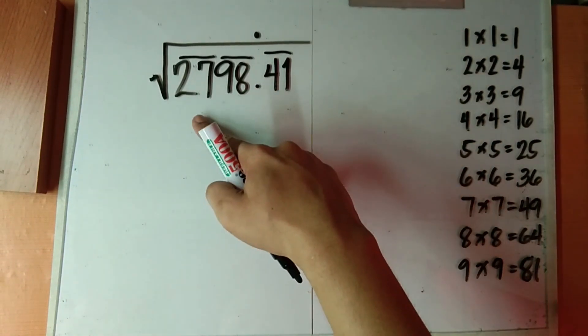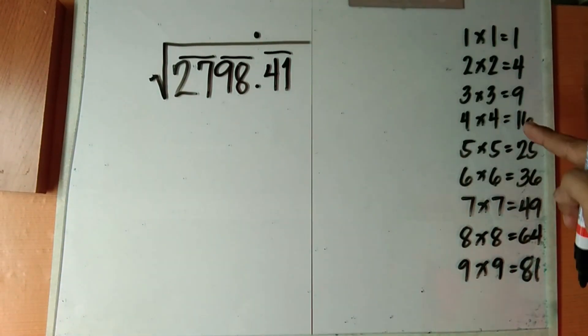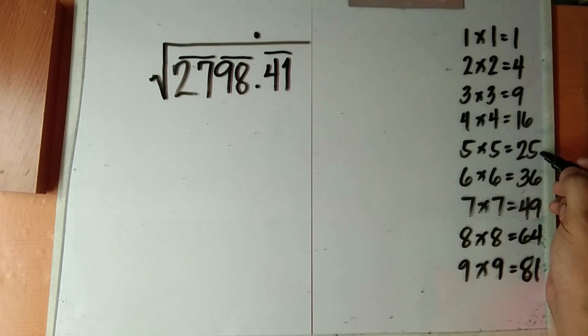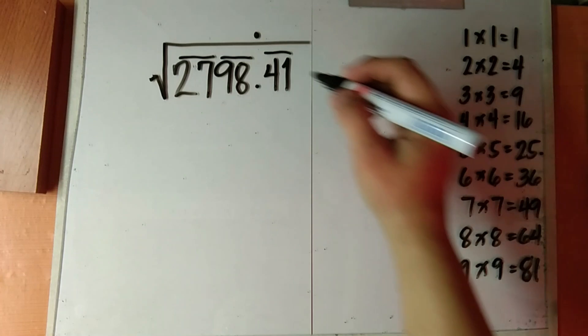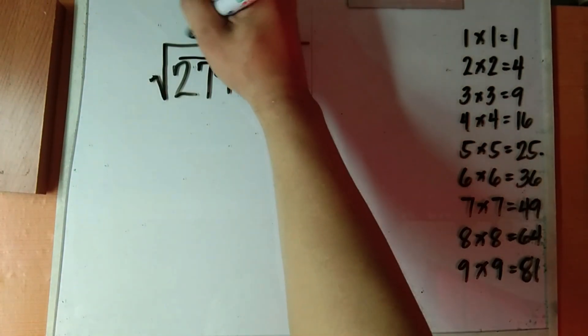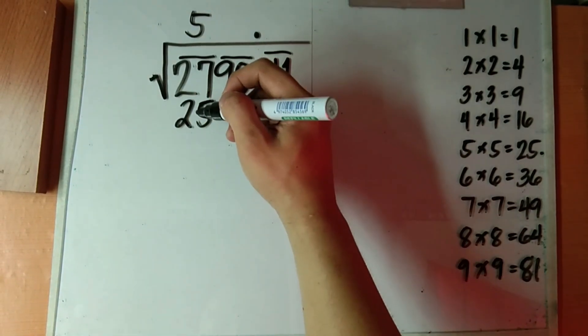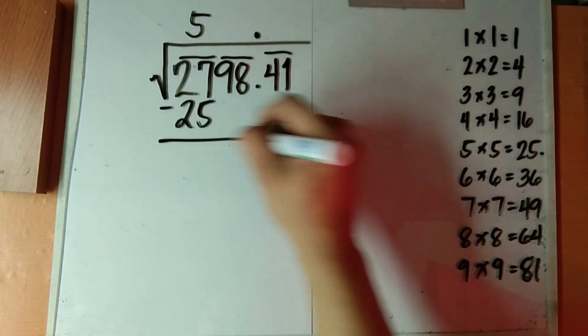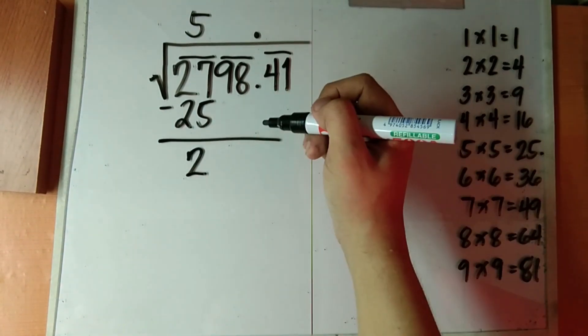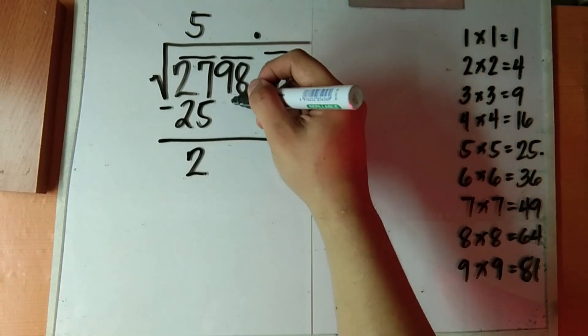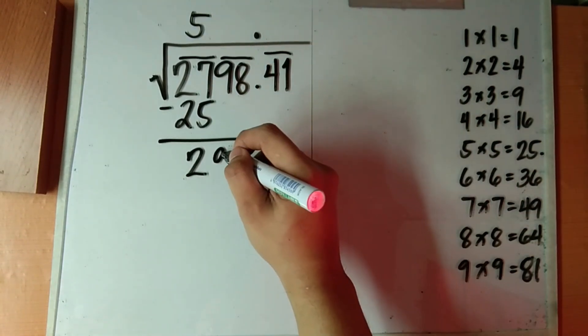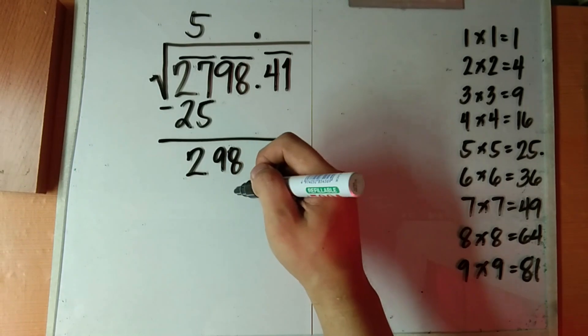Now begin at the left most pair, which is 27. Now observe which of these products have a value of 27 or less. Now in this case, it is 25. Now get the square root of 25, which is 5. Write it above 27. Now get the square of 5. Subtract it from 27, which is 2. Bring down 98.